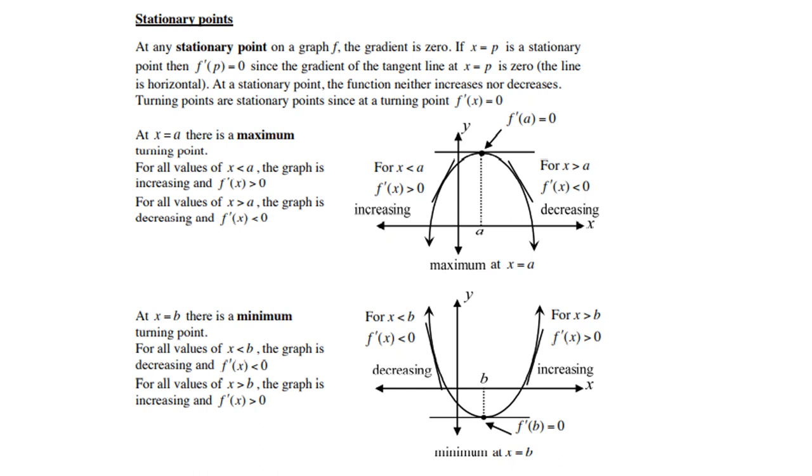Let's first look at a parabola with a maximum turning point. If x = a is a maximum turning point, for all values of x < a, the graph is increasing and the derivative is greater than zero. Then for all values of x > a, the graph is decreasing where the gradient is negative. The graph moves from a positive gradient into zero into a negative gradient.